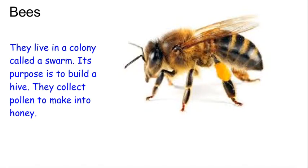Bees are a great example of an animal society. They've got lots of rules which they live by. They live in a colony which is called a swarm, and the swarm can actually move around, but it has a stable center which is called a hive. The purpose of it is to work together in a group to gather pollen from all the flowers and to produce it into honey, which they will then use to feed the other bees.